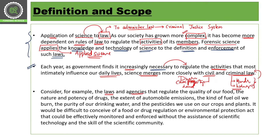Consider this example: laws and agencies that regulate the quality of our food, the nature and potency of drugs, automobile emissions, the kind of fuel and oil we burn, the purity of our drinking water, and the pesticides we use on crops and plants. It would be difficult to conceive of a food or drug regulation or Environmental Protection Act that could be efficiently monitored and enforced without the assistance of scientific technology and the skills of the scientific community.